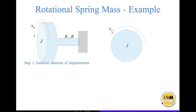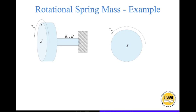Now let's look at a rotational system. We have a rotational mass attached to a combined spring and damper, with one end fixed to a wall. There is a torque tau acting in a given direction.